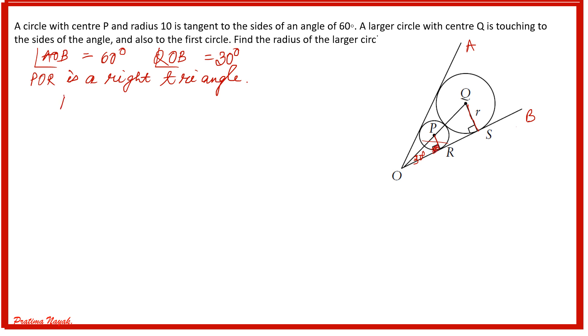So PR over OP is sine 30 degrees. PR is 10, OP equals... sine 30 is half. So OP is equal to 20 units. OP is 20.